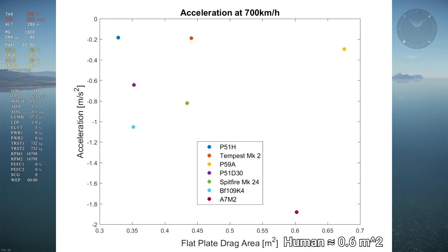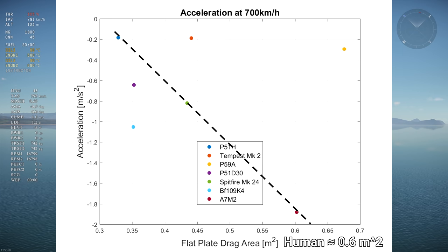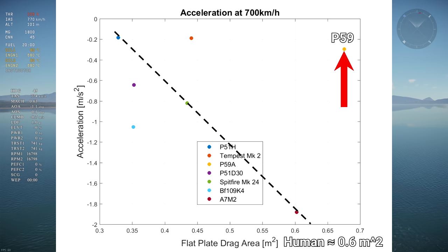The first graph shows the acceleration as a function of drag area. Intuitively, we'd think that the bigger the drag area, the worse the acceleration will be and the lower the LER will be. Indeed, there seems to be a decent correlation between a lower drag area and a higher acceleration, with the P-59 as an outlier which will be explained later. If you wrote down drag, you get one point.